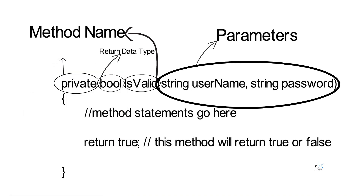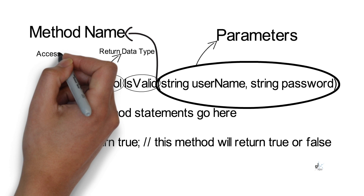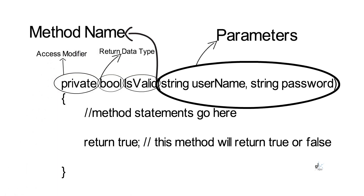The terms parameter and argument are seemingly used interchangeably but have different meanings. The method definition specifies the names and types of any parameters required. When calling code calls the method, it provides concrete values called arguments for each parameter. Access to a method in a class can be restricted through access modifiers — see the previous tutorial, Part 14, on C-sharp encapsulation for further details.